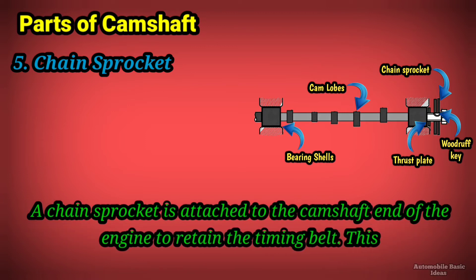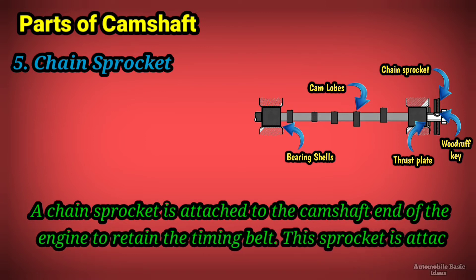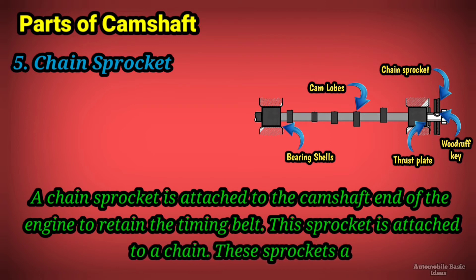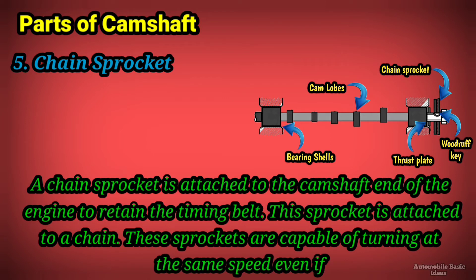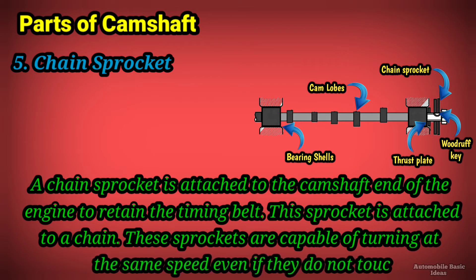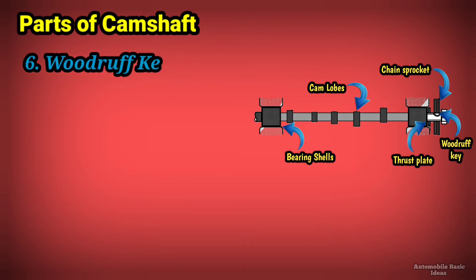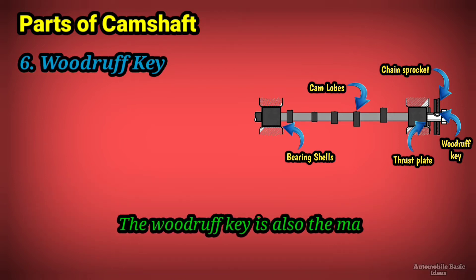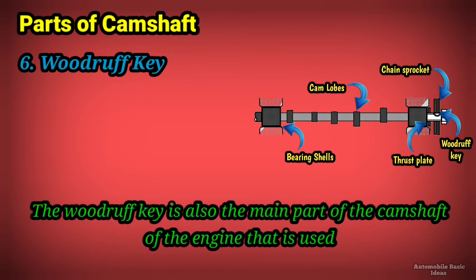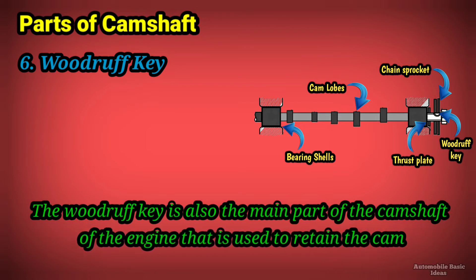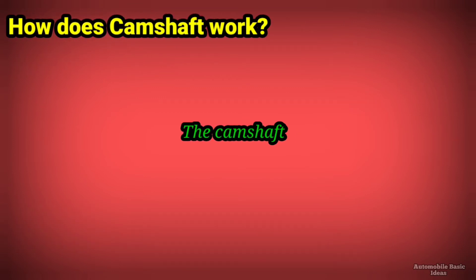The chain sprocket retains the timing belt and is attached to a chain. These sprockets are capable of turning at the same speed even if they do not touch. Six, woodruff key — the woodruff key is also a main part of the camshaft, used to retain the cams at the right time.